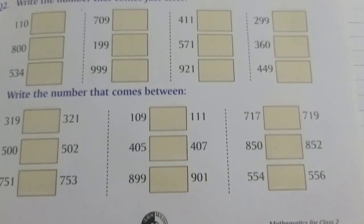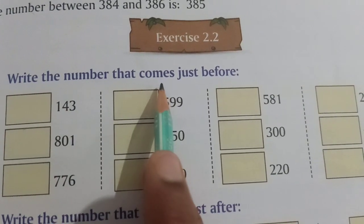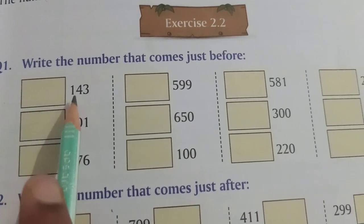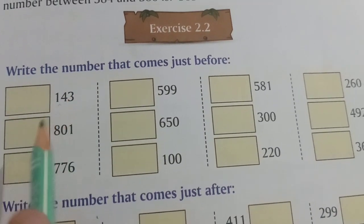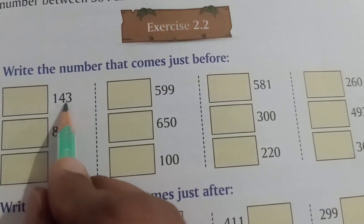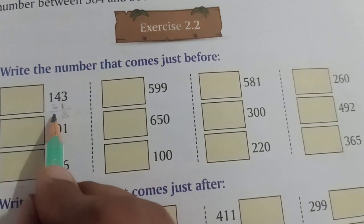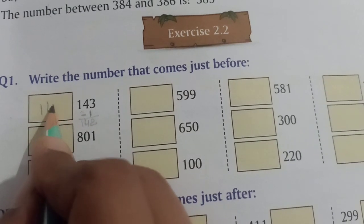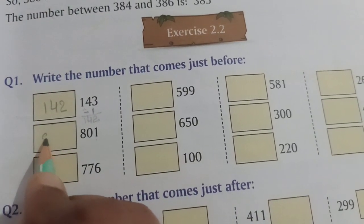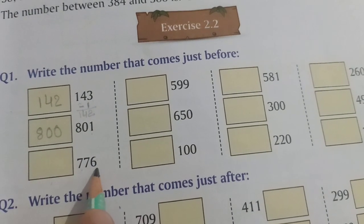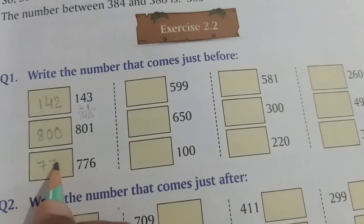Now turn to page number 25. We will do exercise 2.2. Write the number that comes just before. We have to write the numbers which come just before the given numeral. We will subtract 1. The number is 143, and we subtract 1: 3 minus 1 is 2, so we get 142. Here 801 — what comes just before 801? 800. Here 776 — what comes before 776? We subtract 1 and get 775.